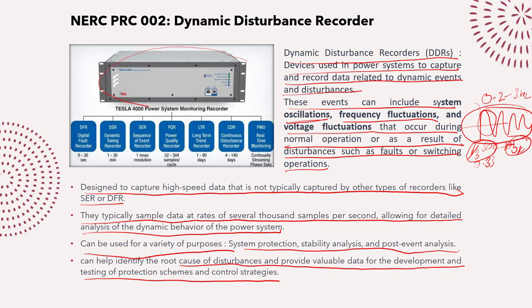A modern single recorder device can now perform the functions of multiple instruments: digital fault recording (files of 0–30 seconds), dynamic swing recording (1–30 minutes), sequential event recording at 1 ms resolution, power quality sampling, long-term SCADA-type recording, continuous disturbance recording, and PMU functionality. Advances in computing power and recording technology have enabled one single device to range from PMU and fault recorder to sequential event recorder, DDR, power quality monitor, and long-term SCADA recording.